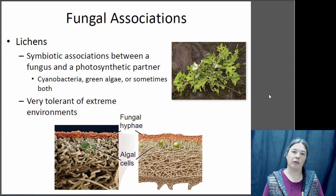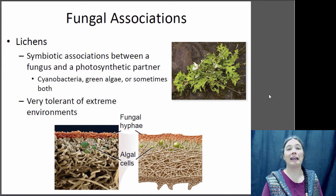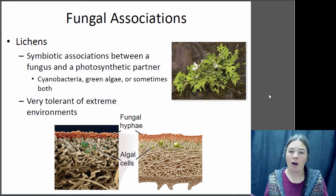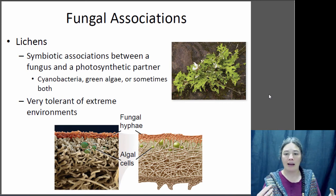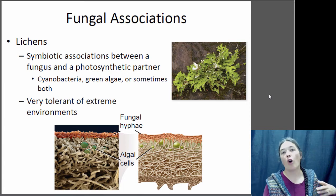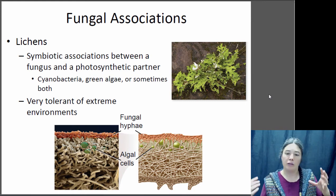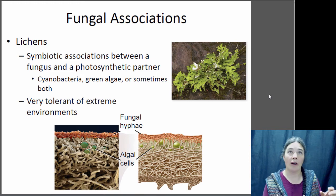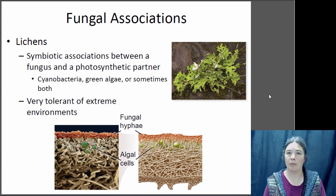There are also fungi that have symbiotic relationships with a photosynthetic partner — usually a cyanobacteria or an algae — and these are what we call lichens. You can remember: Freddie fungus and Alice algae took a lichen to each other. Lichens are really important for breaking down rock — they're one of the few things that weather and break down rocks. The algae has a nice home, the fungus protects the algae, the algae is photosynthetic making sugars that feed the fungus. This allows lichens to live where really nothing else could grow, like on the sheer face of a rock.